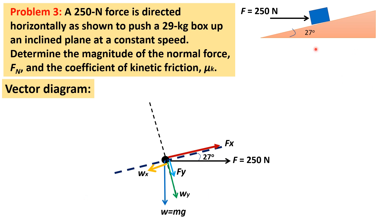The force of kinetic friction F_k is directed down the plane because the applied force tends to move the box up the plane, so kinetic friction opposes that motion. The normal force F_N is directed along the positive y-axis. Since the box moves at constant speed, the summation of Fx = 0 and the summation of Fy = 0.